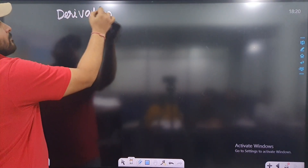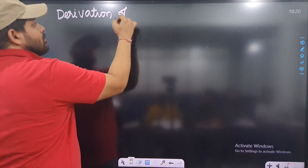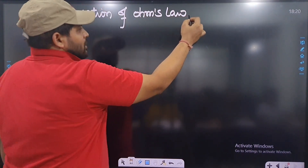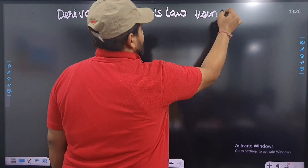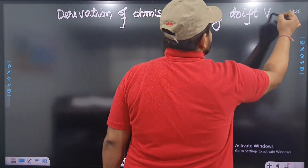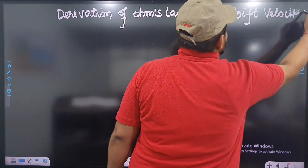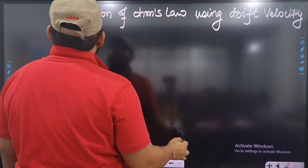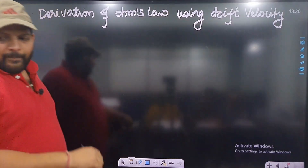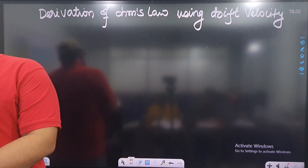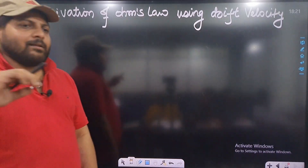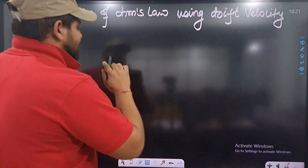Derivation of Ohm's law using drift velocity. Consider a material of length L and cross-sectional area A.